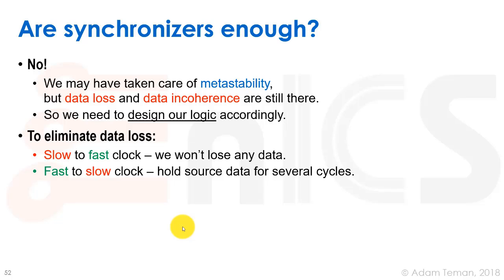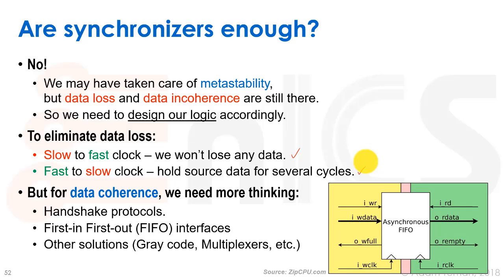When going from a slow to a fast clock, we won't usually lose data since the fast clock samples multiple times per slow-clock data change. But going from a fast clock to a slow clock, we must hold the source data for several cycles to ensure it reaches the other side. For data coherence, we need asynchronous interfaces such as handshake protocols, where each side confirms readiness before data is removed or updated.